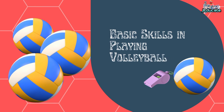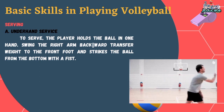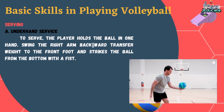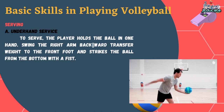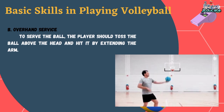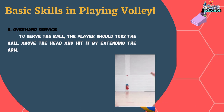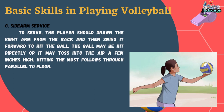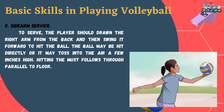Basic Skills in Playing Volleyball. Serving. Letter A, Underhand Service: to serve, the player holds the ball in one hand, swings the right arm backward, transfers weight to the front foot, and strikes the ball from the bottom with a fist. Letter B, Overhand Service: the player should toss the ball above the head and hit it by extending the arm. Letter C, Sidearm Service: the player should draw the right arm from the back and then swing it forward to hit the ball. The ball may be hit directly or tossed into the air a few inches high. The follow-through must be parallel to the floor.